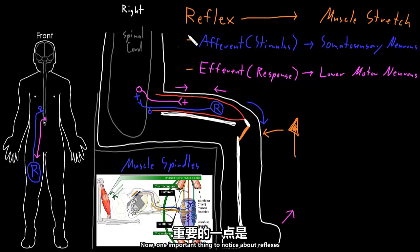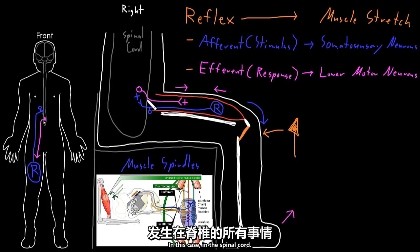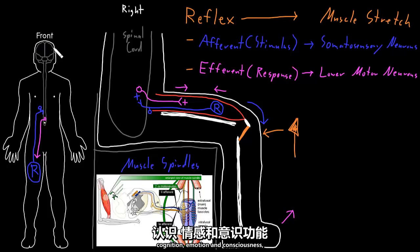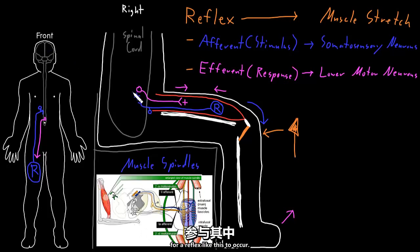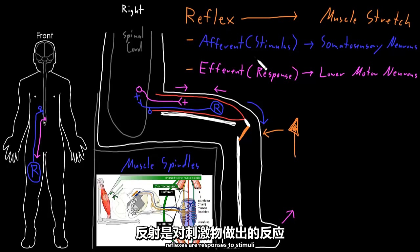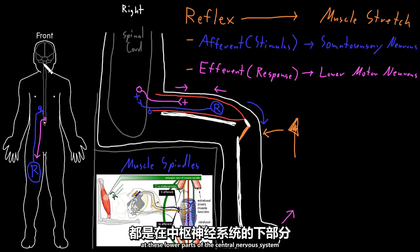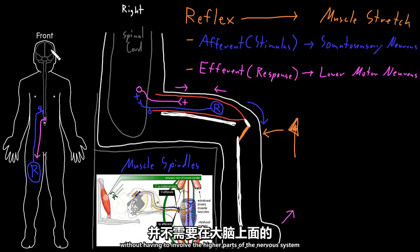One important thing to notice about reflexes is how all of this occurs down here in the spinal cord, or in the brainstem if it's a brainstem reflex. The higher parts of the nervous system — the cerebrum, where higher functions like cognition, emotion, and consciousness reside — don't have to get involved for a reflex to occur. This is why we say reflexes are responses to stimuli that don't require the involvement of consciousness: the wiring occurs at these lower parts of the central and peripheral nervous system without involving the cerebrum.